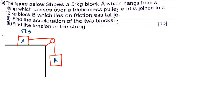From the question, I've had to reconstruct the diagram since I lost it. I've swapped the labels because they say the 12 kg block lies on the frictionless table, meaning B is on the table at 12 kg and A is the hanging block at 5 kg. So block A hangs from the string which passes over the frictionless pulley and is joined to the 12 kg block B which lies on the frictionless table.